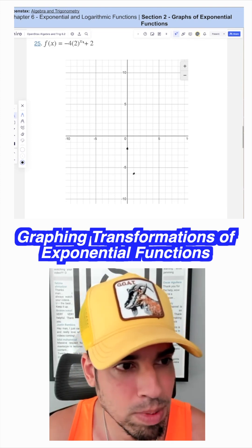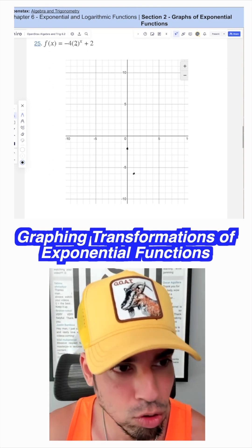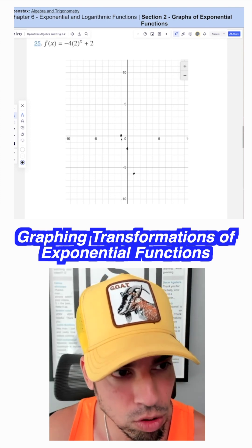And then maybe what about negative 1? 2 to the negative 1 is 1 half times negative 4 is negative 2 plus 2 is 0, so on and so forth.